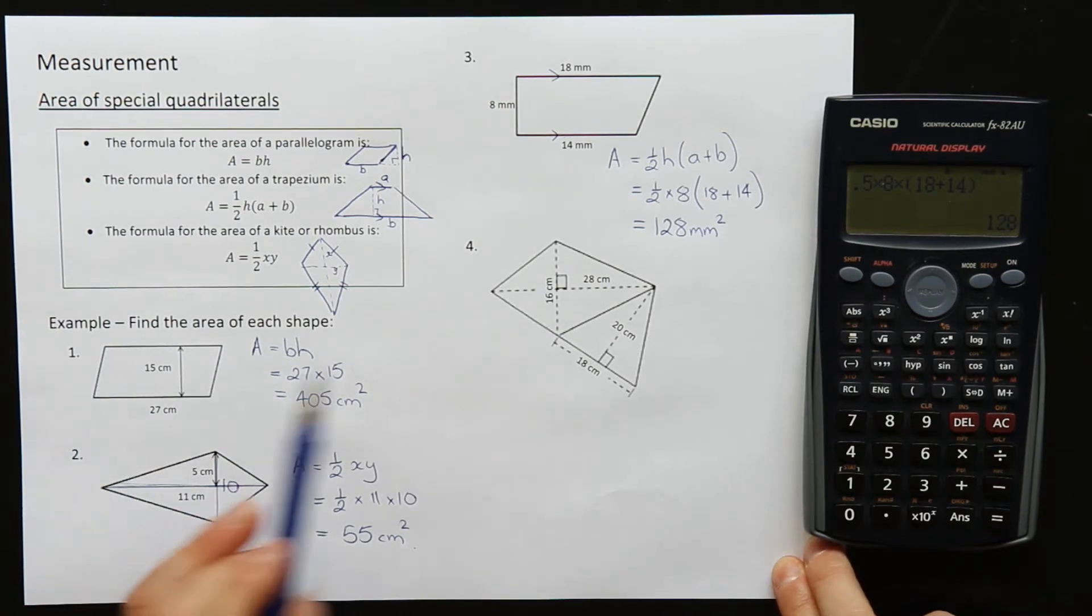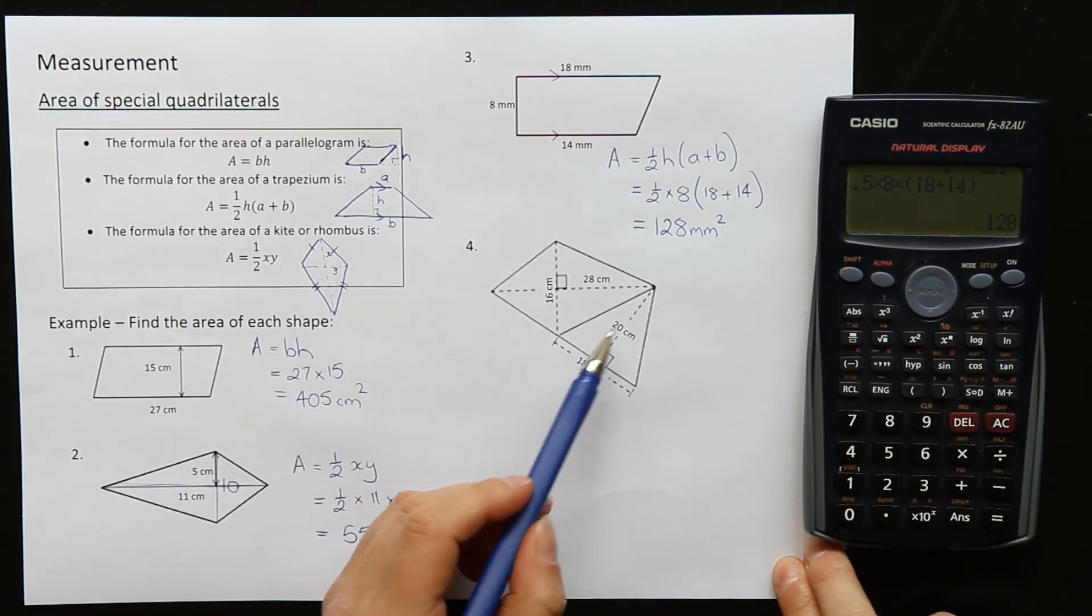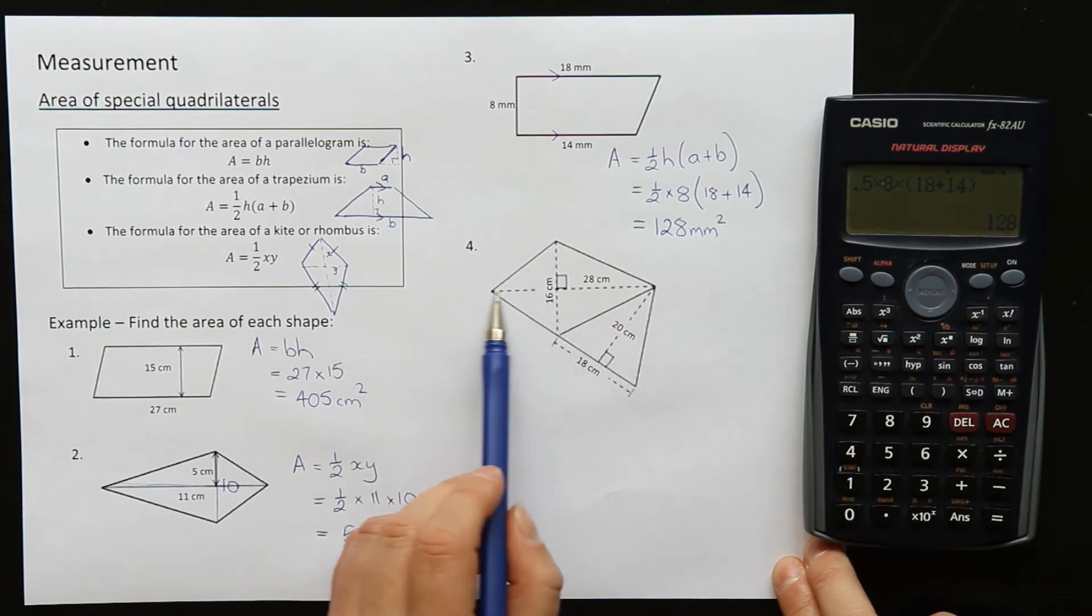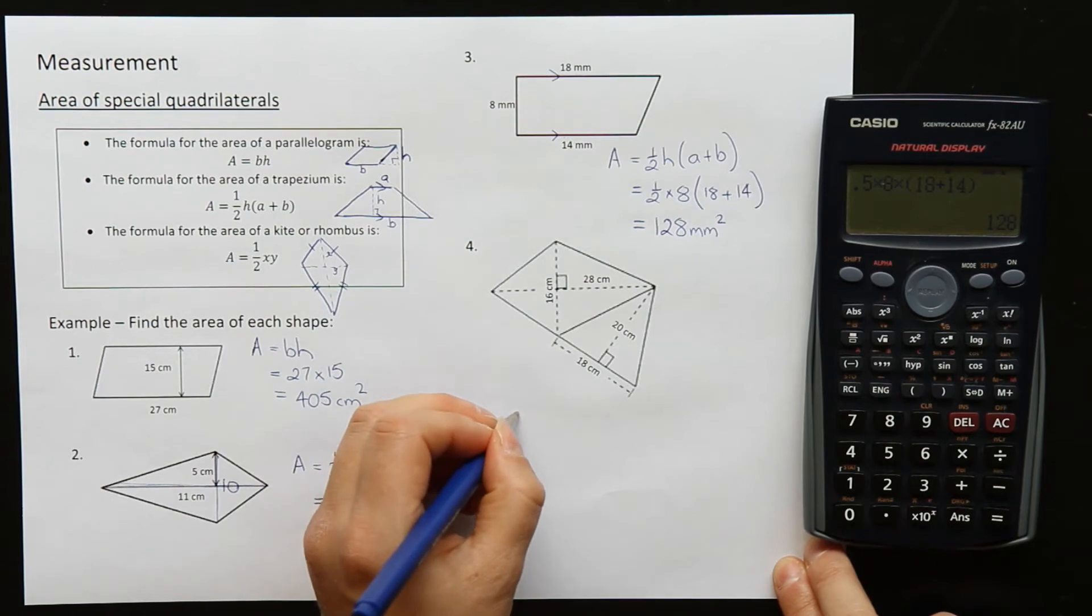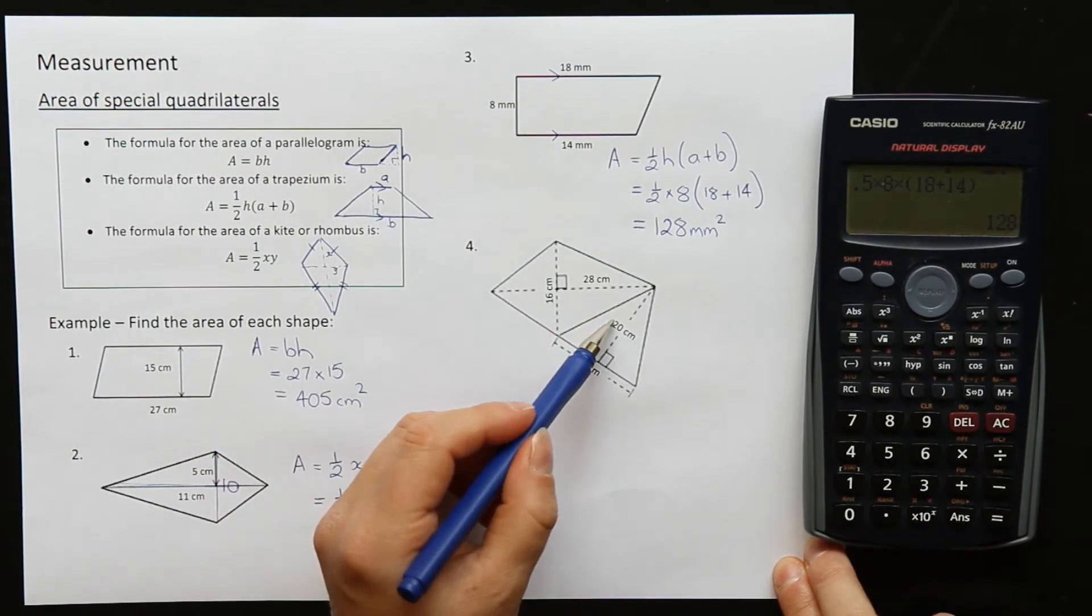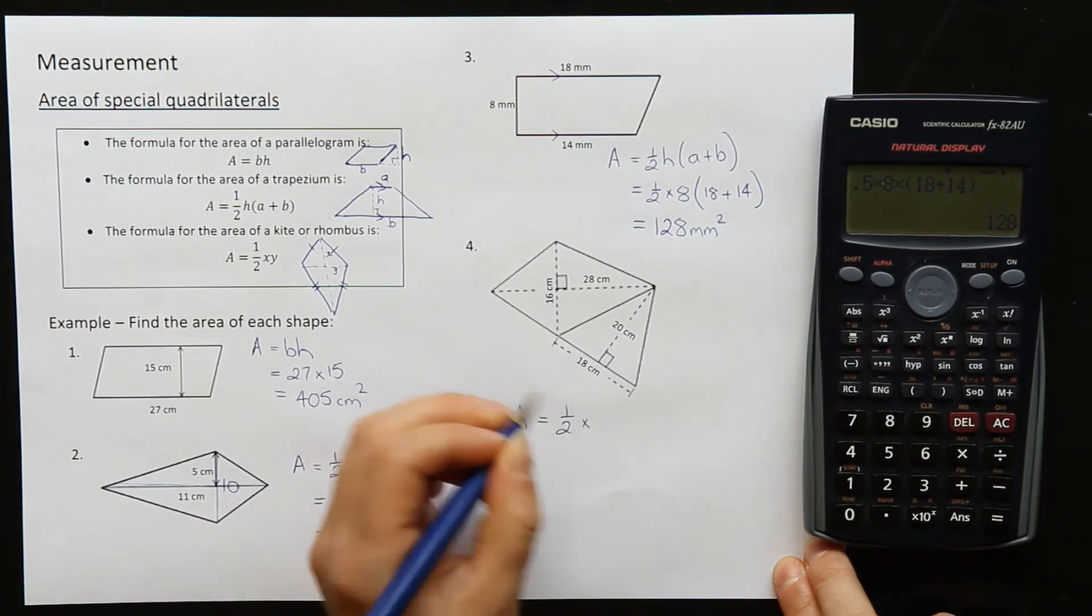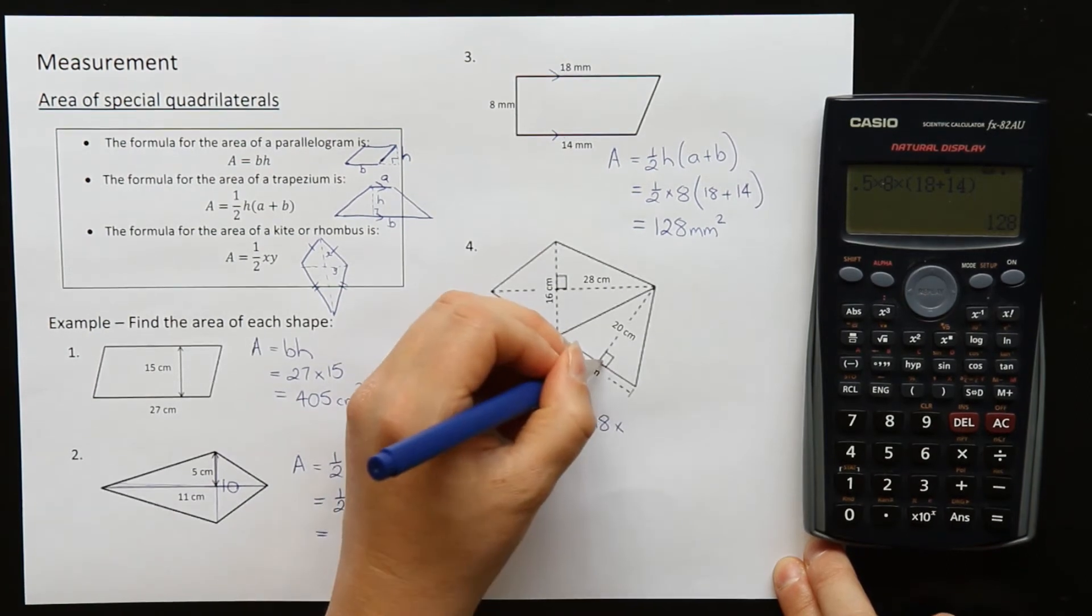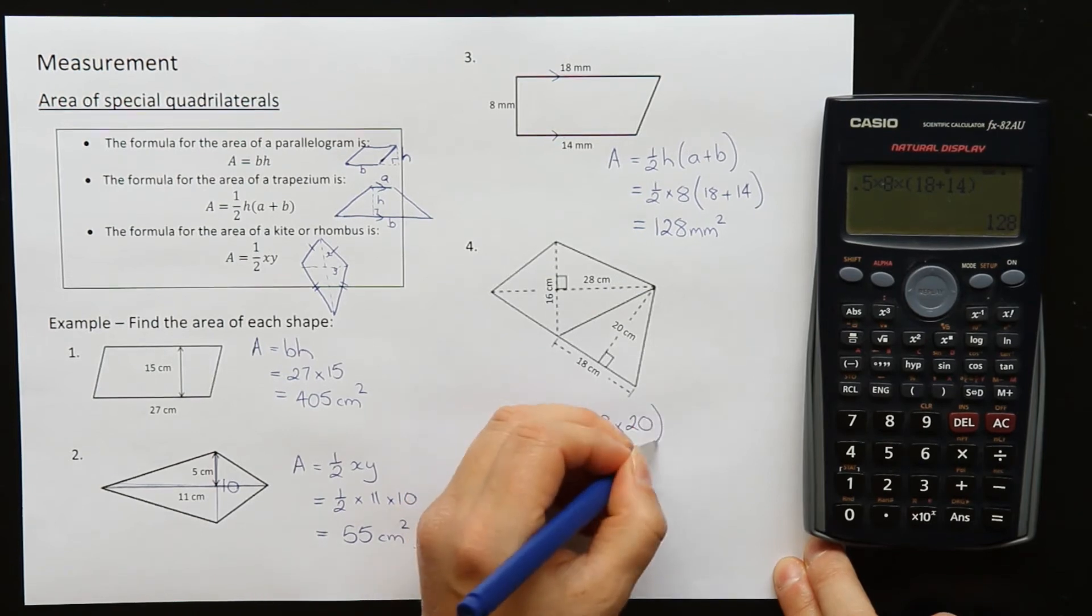And for a bit of fun, here question four we have two of these shapes combined together. Actually one of them is a triangle that we learned about last lesson. So we have a kite here and we have a triangle. So let's start with our triangle. From last lesson we learned that a triangle was half the base times the height. So half times base is 18 and the perpendicular height with the right angle here is 20.